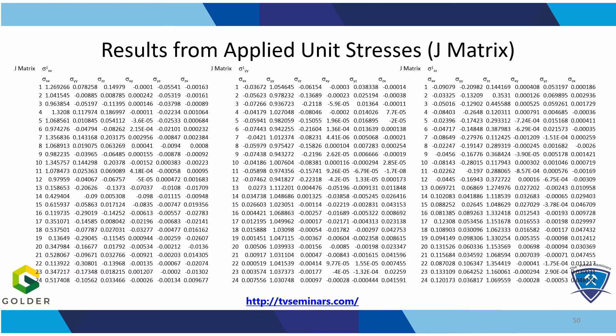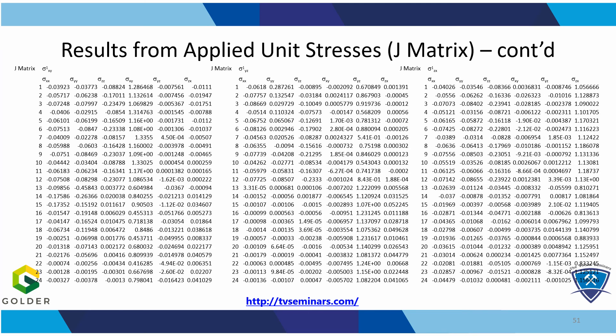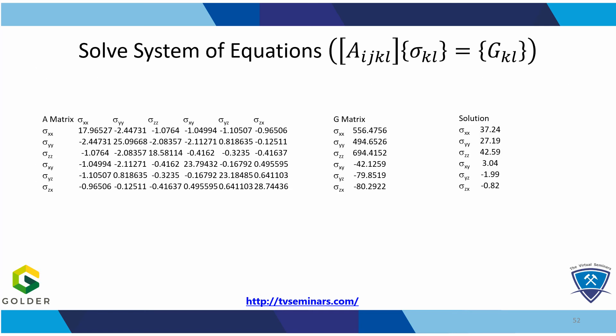These are the J matrix components for each location sample. This page shows the stress tensors for all 24 locations due to unit normal components of the stress. And this page shows the stress tensors for all 24 locations due to the unit shear components of the stress. Recall that once we have all this data assembled into a J matrix, we can readily calculate the A and G matrices that will allow us to solve for the regional stress field. We are actually trying to match or minimize the error for 144 pieces of information — 24 locations with six stress components each. These are the resulting A and G matrices, and after solving the system of six equations, which you can do quite easily in Excel, we now have an estimate of the regional stress field. Mission accomplished.